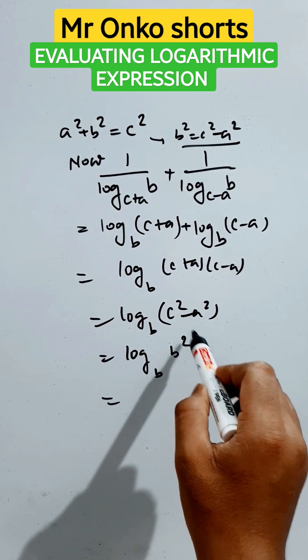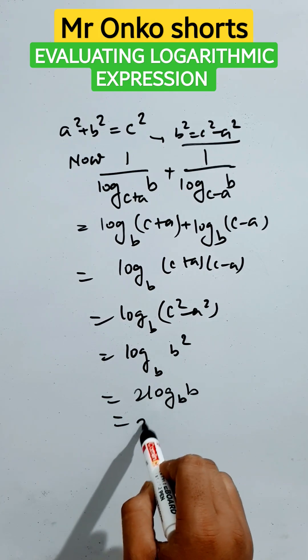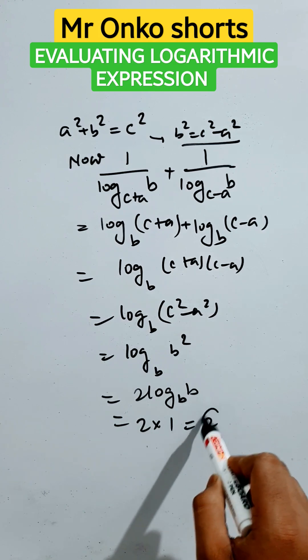Now we know the properties of logarithm. If there is any power, it will be multiplied as a coefficient of logarithm. So 2 into log of b to the base b will be 1. So the answer is 2.